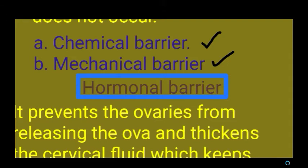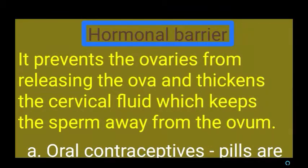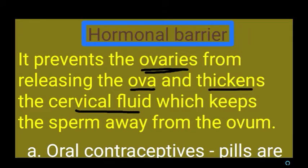Under chemical barrier methods, the hormonal barrier method prevents the ovaries from releasing ova, and also thickens the cervical fluid. Because of the thickening of cervical fluid, it keeps the sperm away from the ovum, so the sperm cannot swim into the female reproductive tract, thereby preventing the meeting of ovum and sperm.